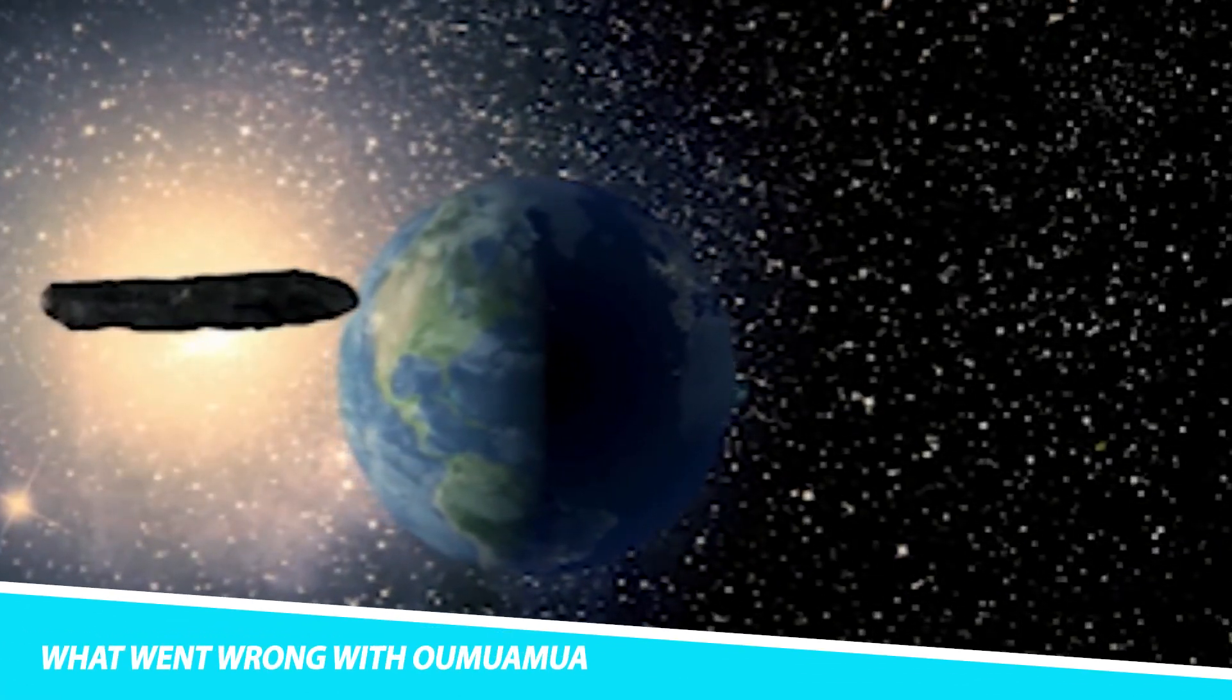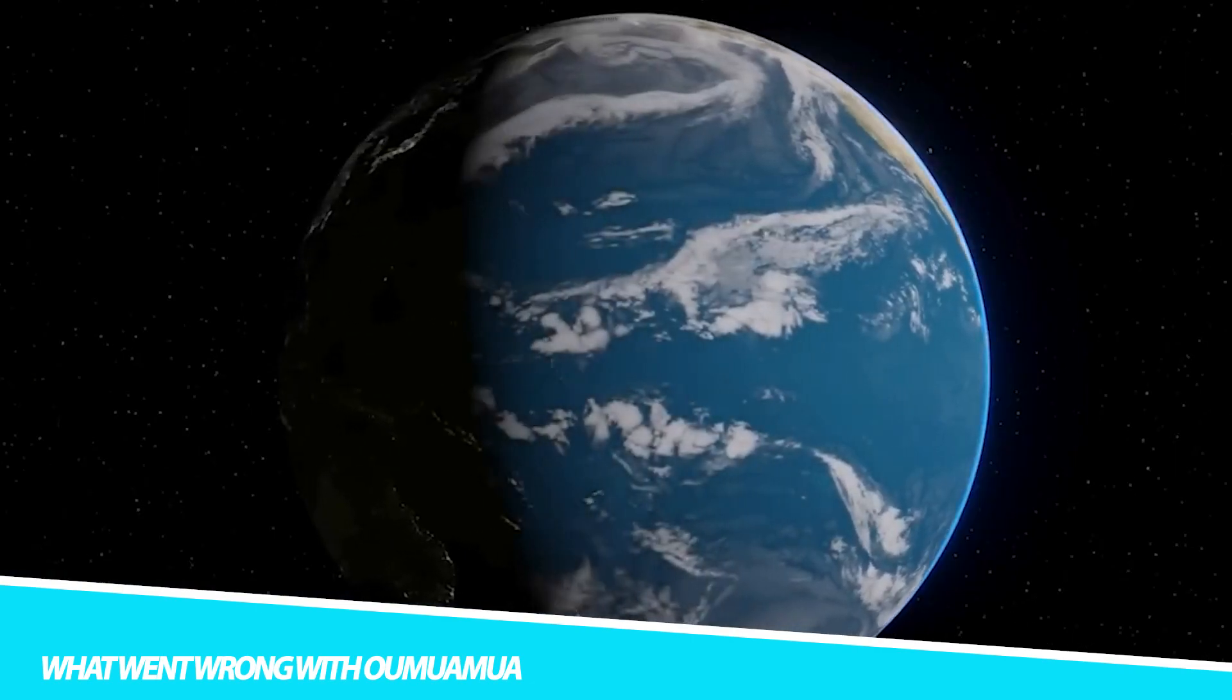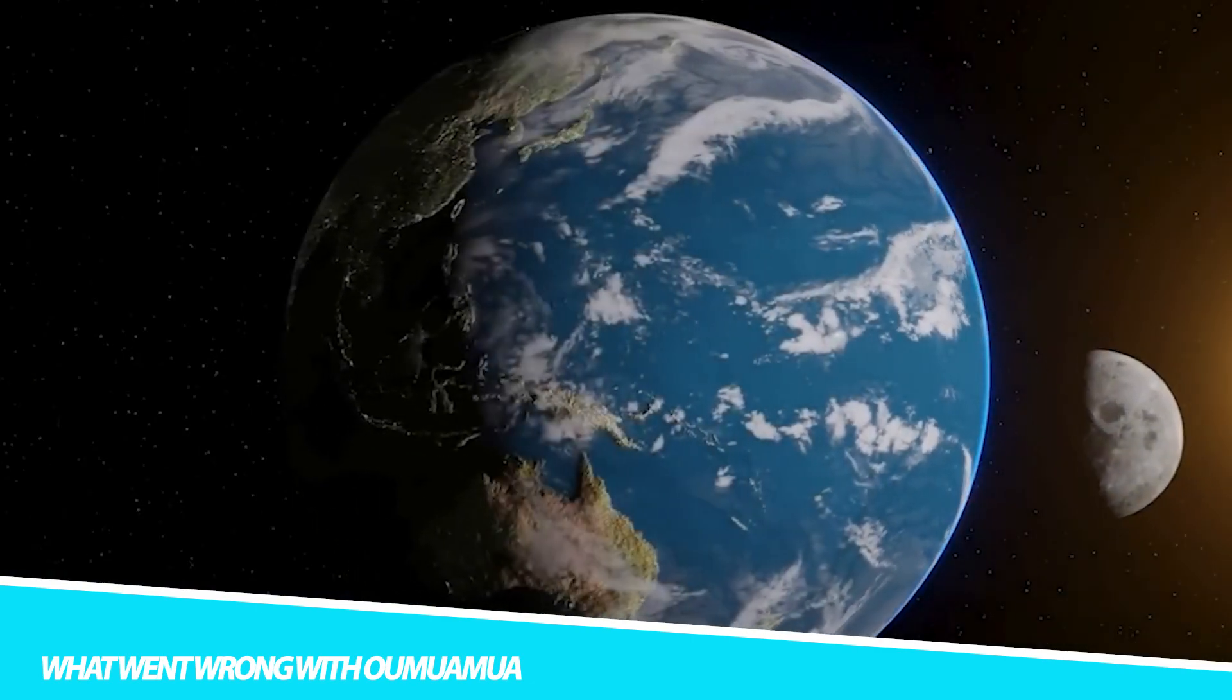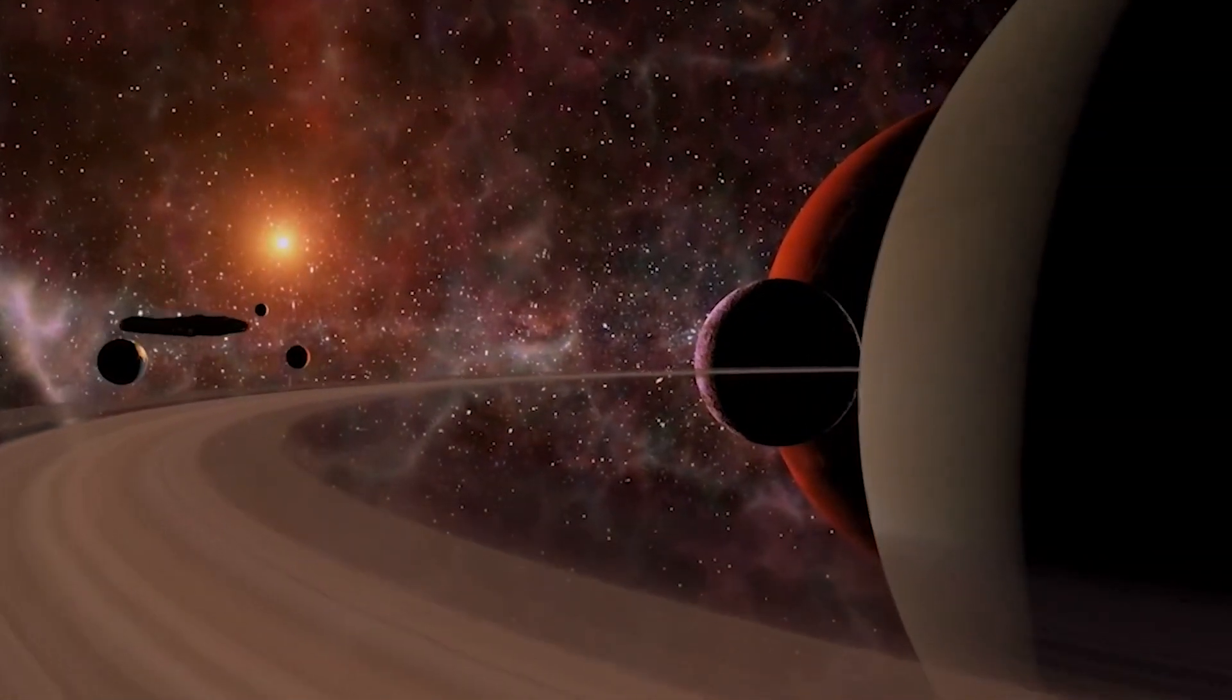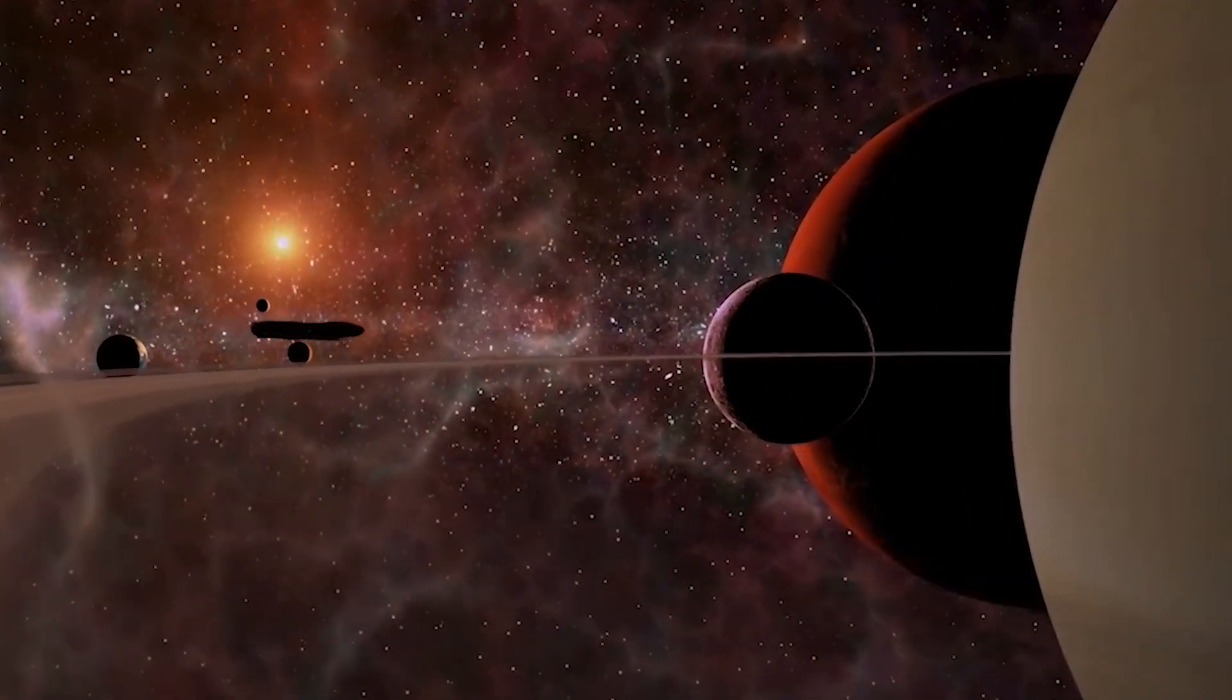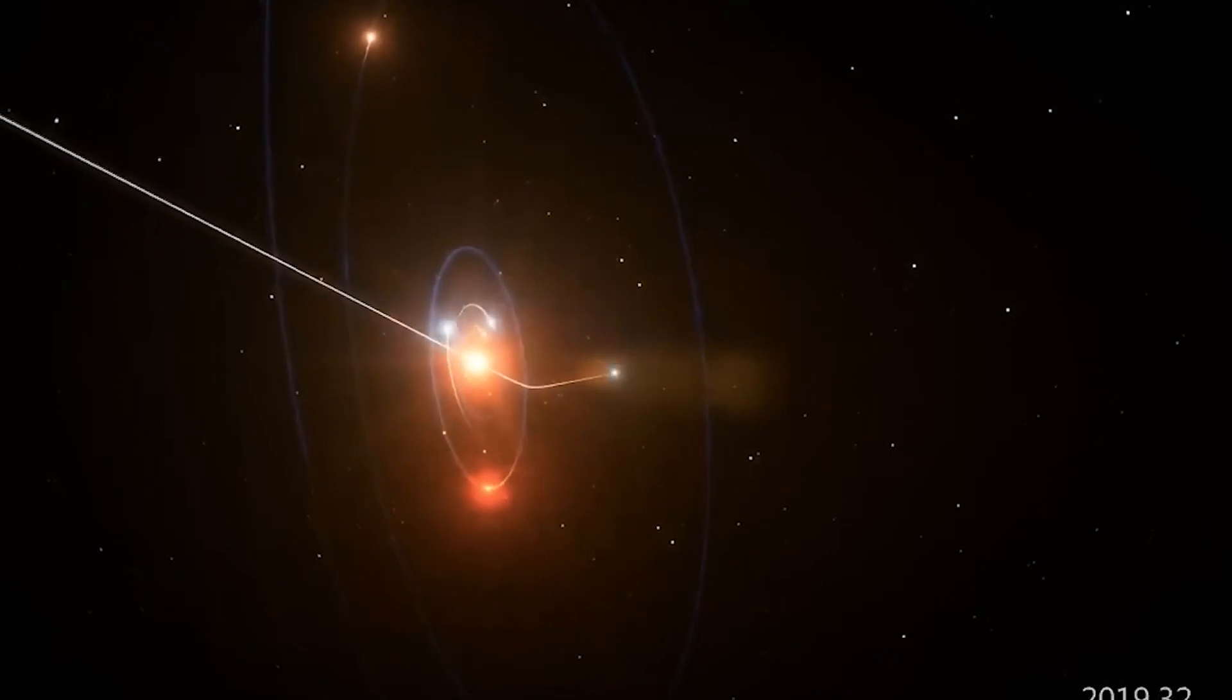What went wrong with Oumuamua? The first ever interstellar object to be observed unexpectedly appeared in the solar system in 2017 and immediately put scientists in a difficult position.